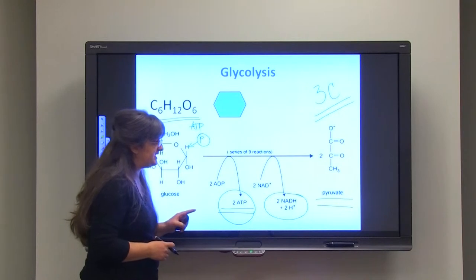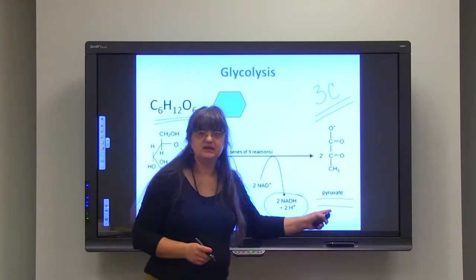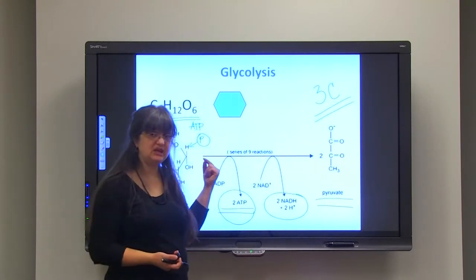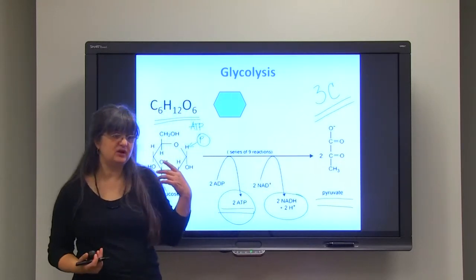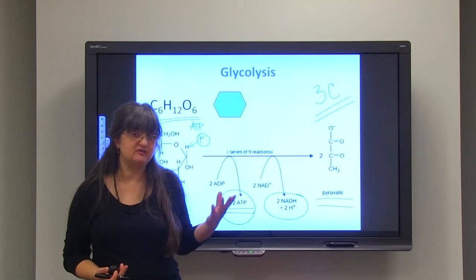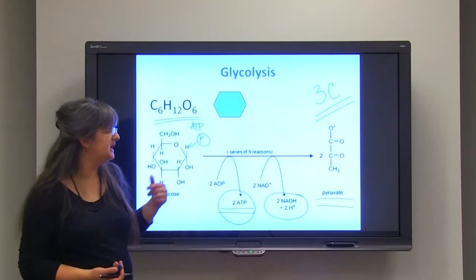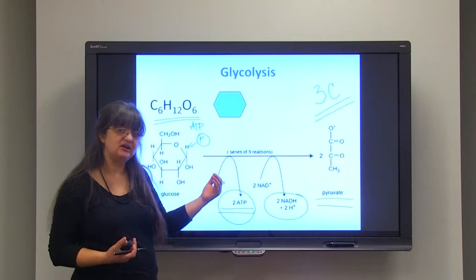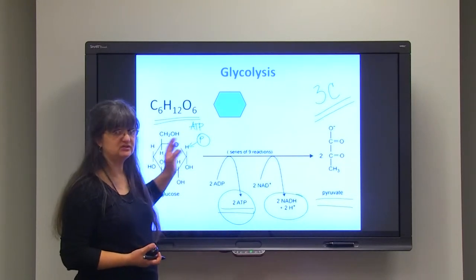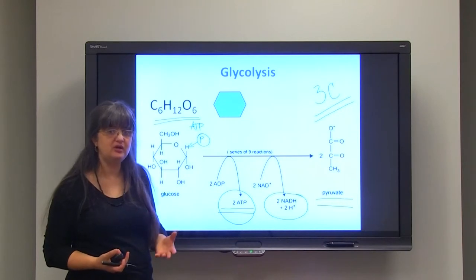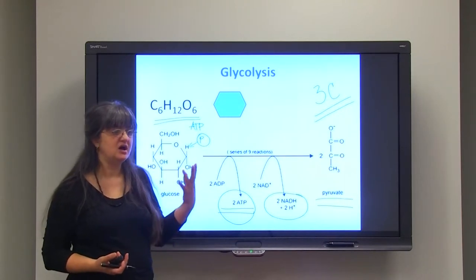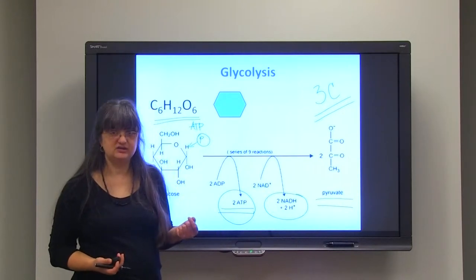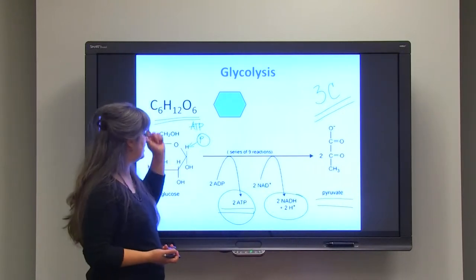Pyruvate can also be used to make glucose. In the case that we are not taking in enough glucose, the pyruvate molecule can be utilized in our liver to be converted back to glucose. In our liver, the polymer that is our energy depot is glycogen — glycogen being the polymer of glucose.